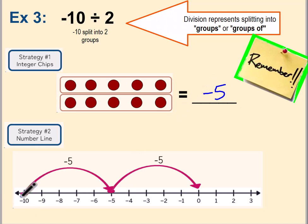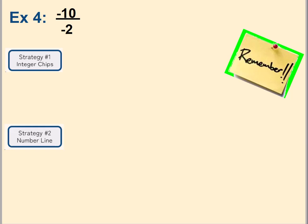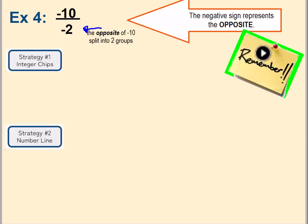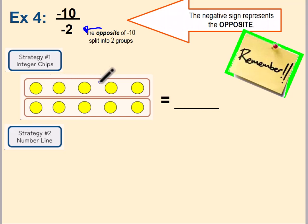Example four: we can represent division using a fraction bar. This is read as negative ten divided by negative two. The divisor is on the bottom — that's the number of groups — but we can't have negative groups. The negative sign represents the opposite, so the opposite of negative ten is what gets split into two groups. The opposite of negative ten is positive ten. Take your ten positives, split them into two equal groups.